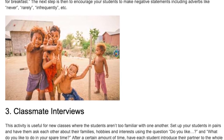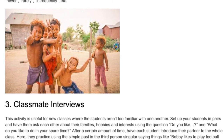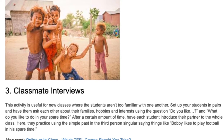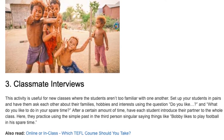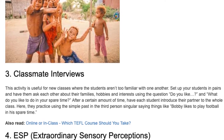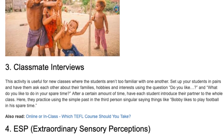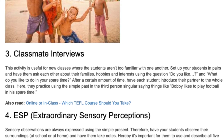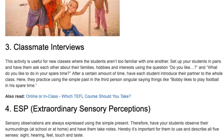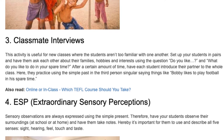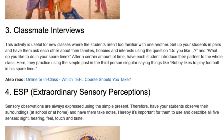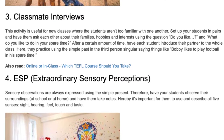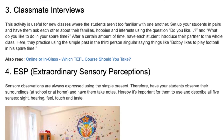3. Classmate Interviews. This activity is useful for new classes where students aren't too familiar with one another. Set up students in pairs and have them ask each other about their families, hobbies, and interests using 'Do you like...?' and 'What do you like to do in your spare time?' After a certain amount of time, have each student introduce their partner to the whole class, practicing the simple present in the third person singular — for example, 'Bobby likes to play football in his spare time.'